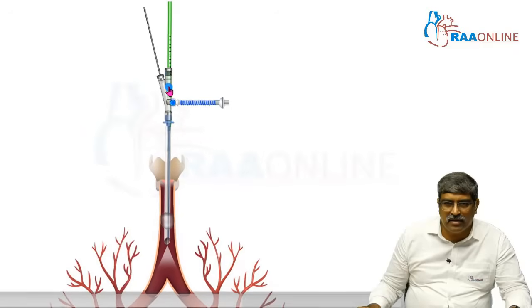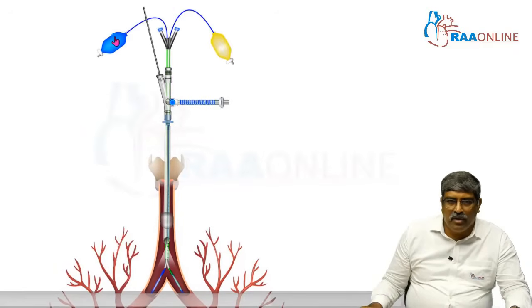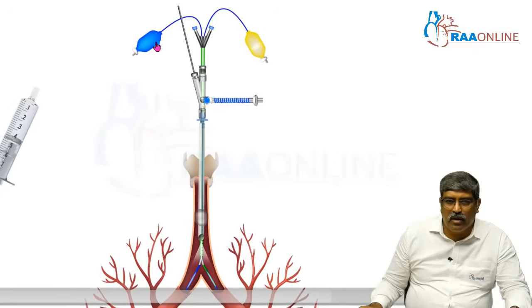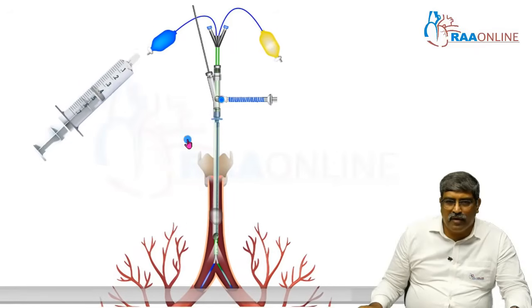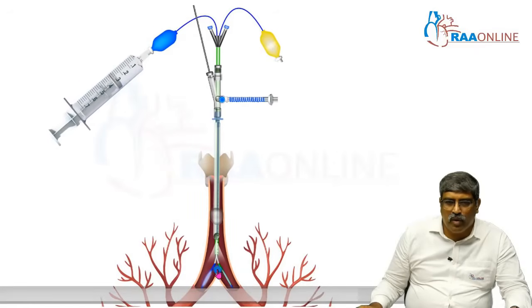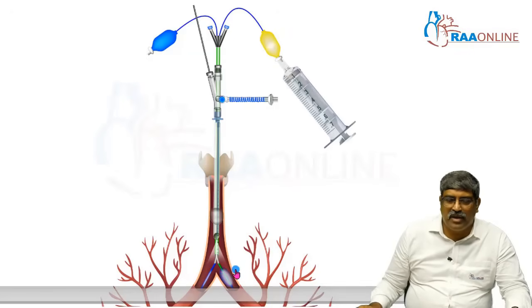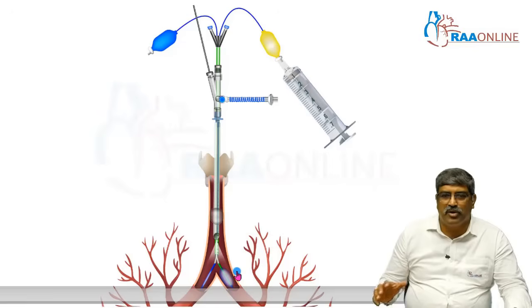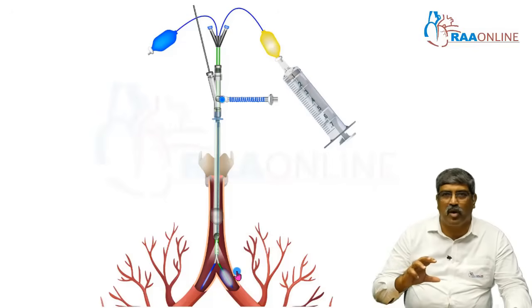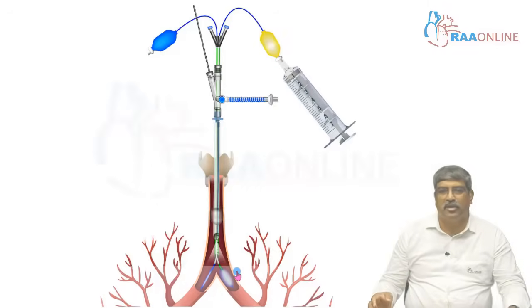You can see the EZ blocker going in with its blue balloon and yellow balloon. As you inflate the blue one, the right mainstem bronchus is blocked, and when you inflate the other balloon, the left mainstem bronchus is blocked. So you can block whichever bronchus is required.